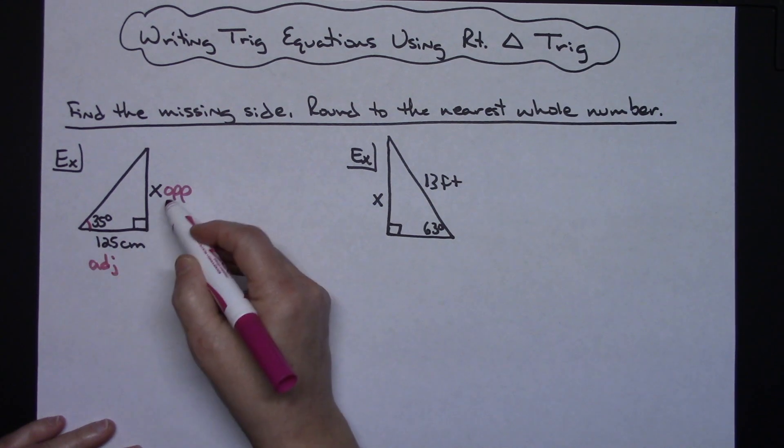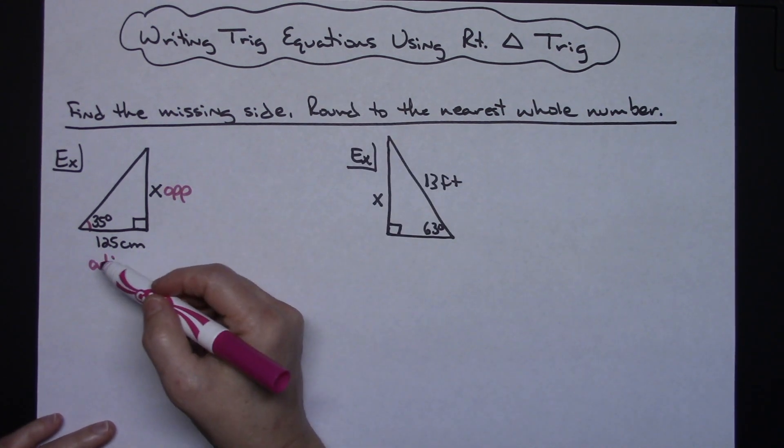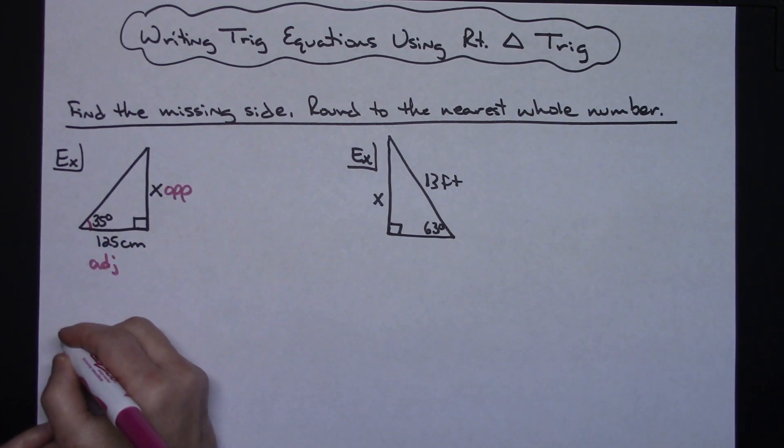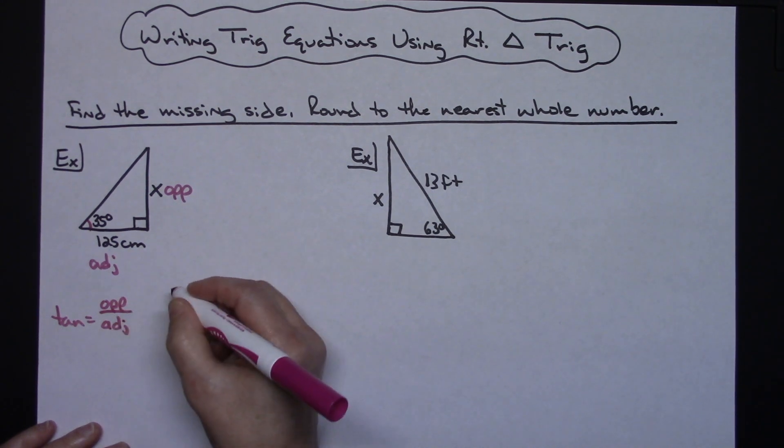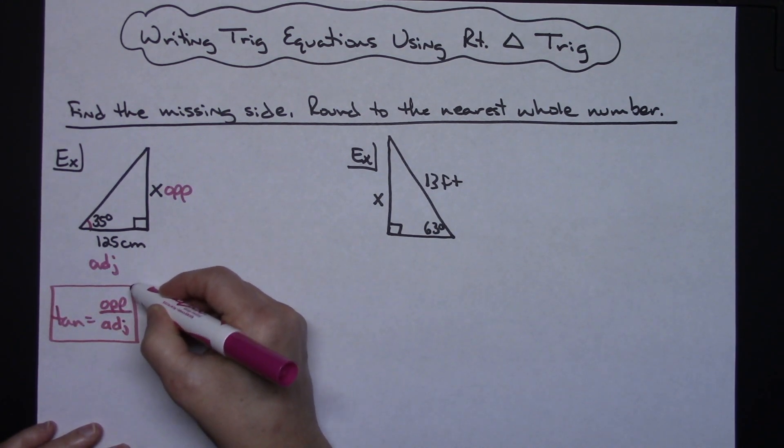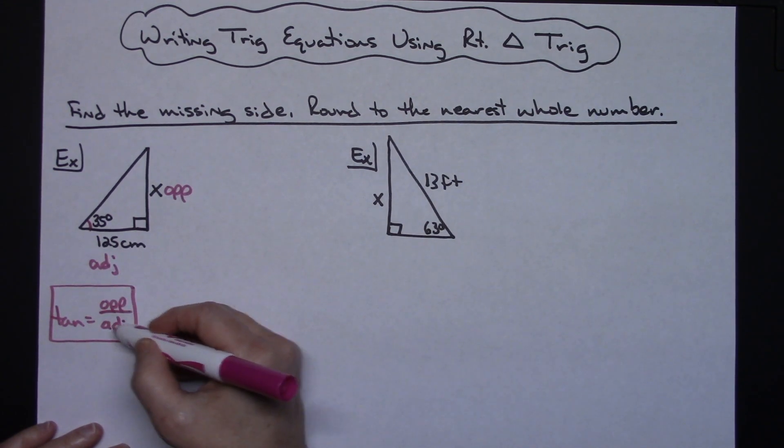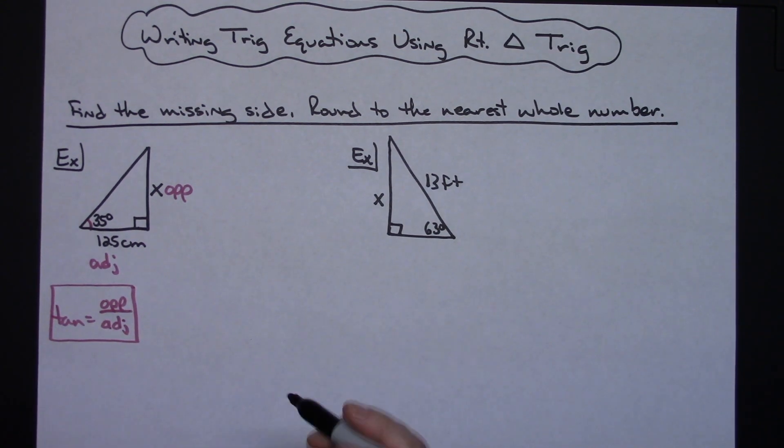Those two pieces of information tell you which trig formula you need to use to write your trig equation. If I have them all memorized, I know that tangent is opposite over adjacent. That's one of your right triangle trig definitions. I have opposite and adjacent, so opposite over adjacent is tangent. Tangent is what I'll use in my trig equation.